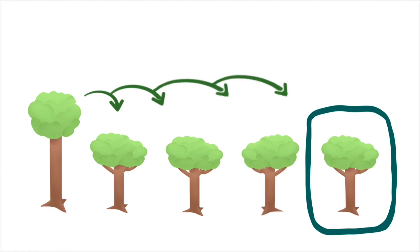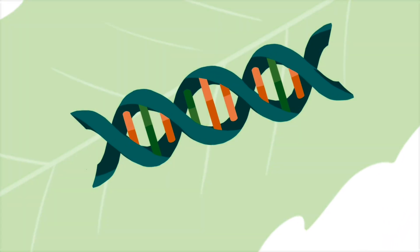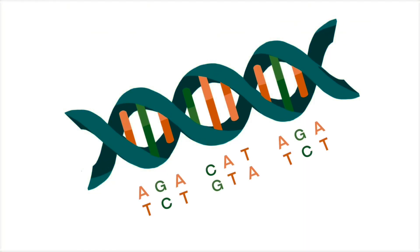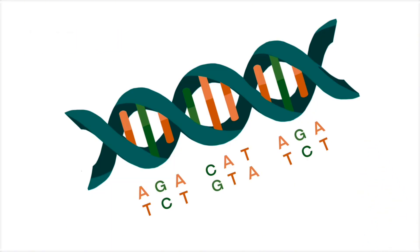Then, a better way to breed came along. Advances in genetics allowed us to read a tree's DNA. By assessing this genetic code, or genome, we could speed up the breeding cycle and make smarter selections along the way.